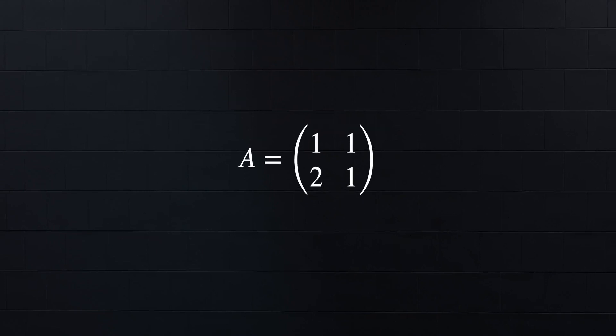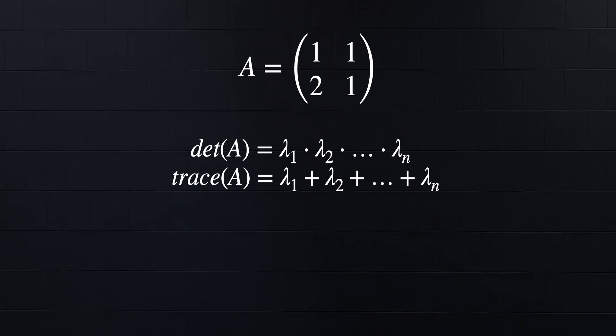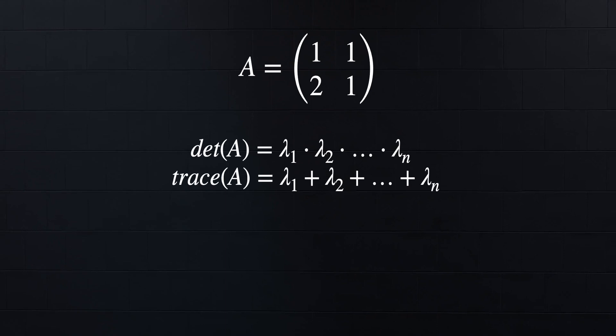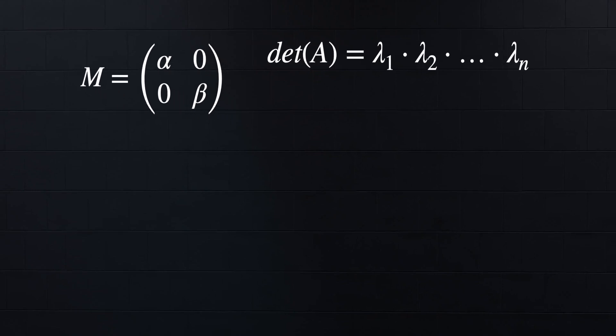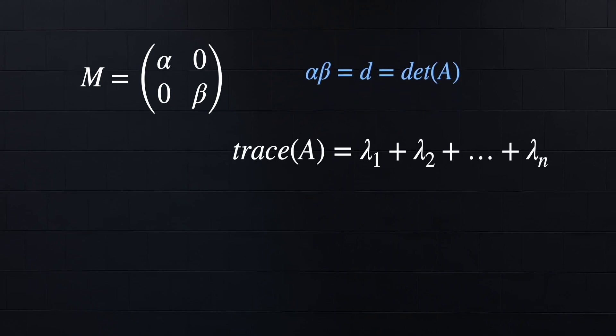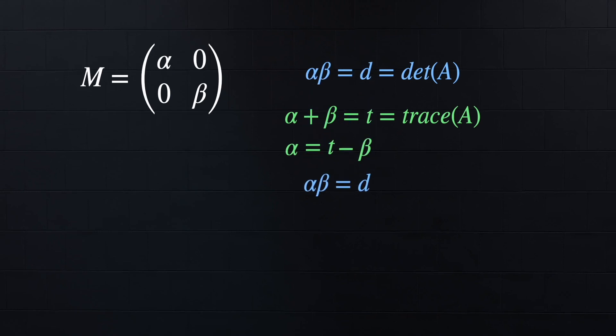Now that we know these two facts, let's derive an equation to find the eigenvalues of any 2x2 matrix. So let's call the eigenvalues alpha and beta. With the first definition, the determinant of our main matrix A equals the product of all the eigenvalues. So we can say that alpha times beta equals d, which is the determinant of matrix A. Then the trace of A should equal the sum of all the eigenvalues, so alpha plus beta equals t, which is the trace of A. Now let's rearrange the second equation to isolate alpha, which equals t minus beta.